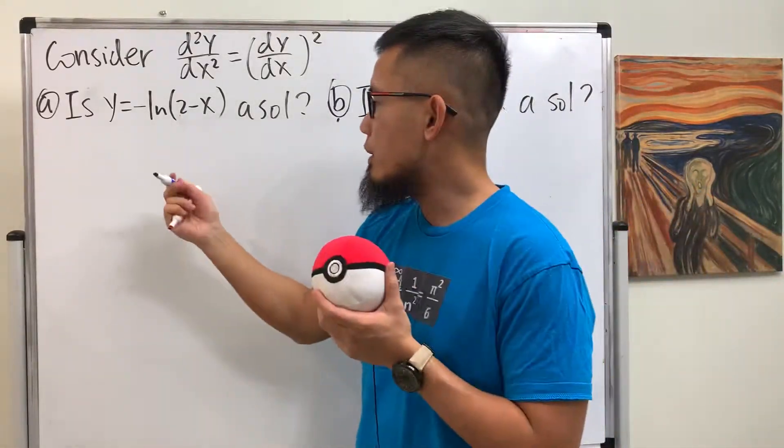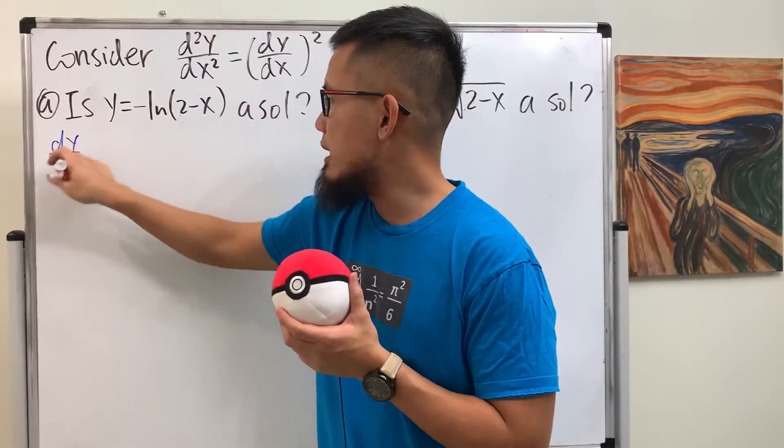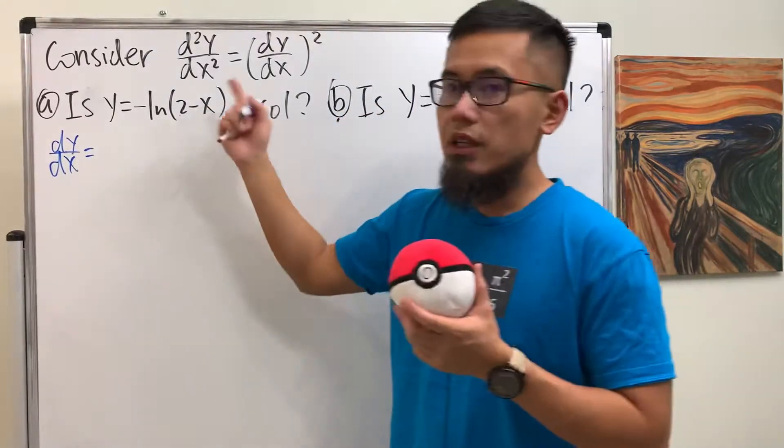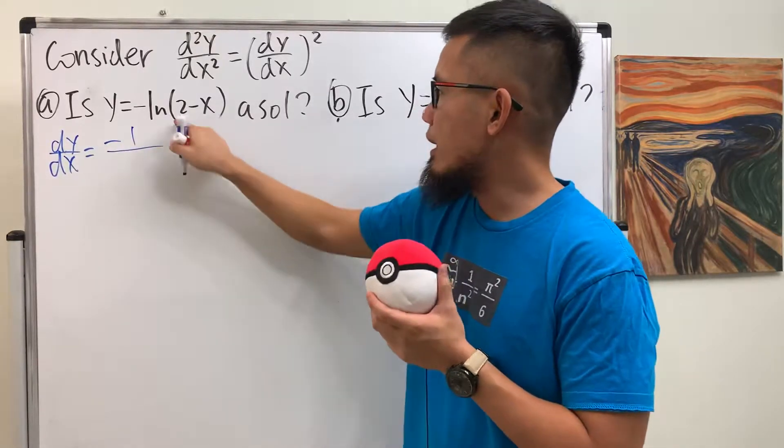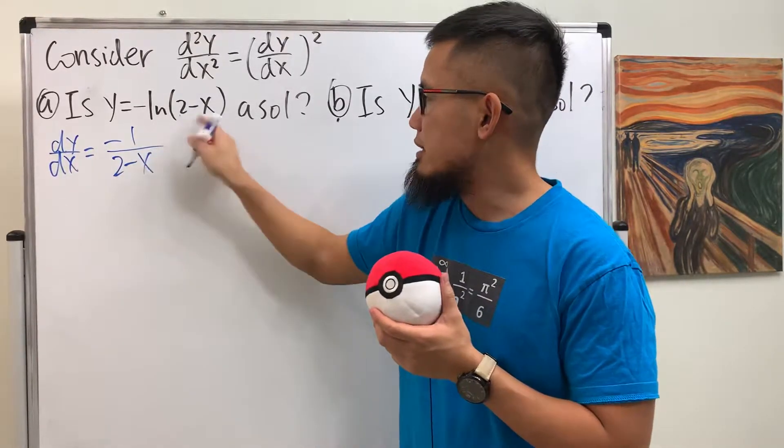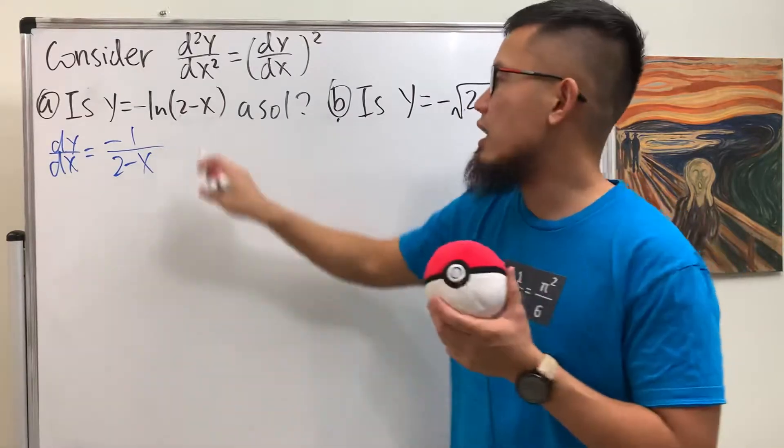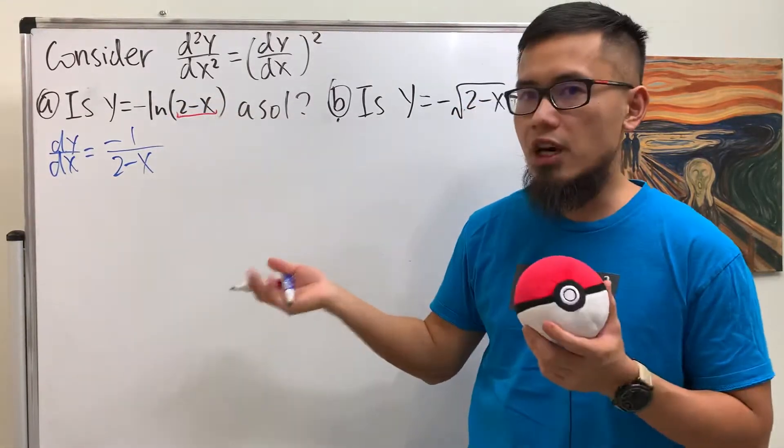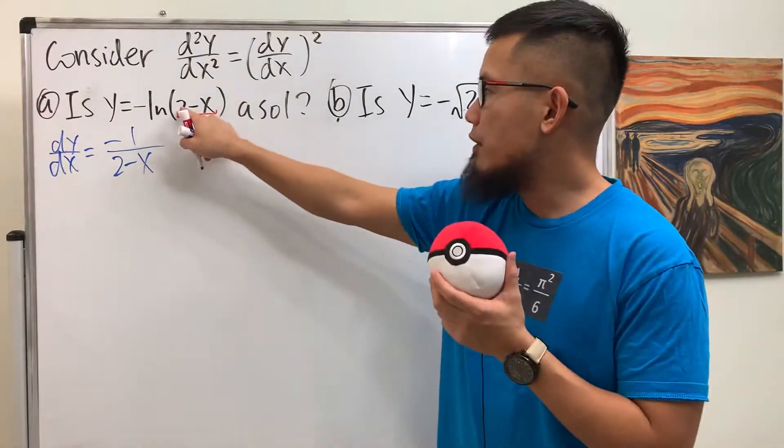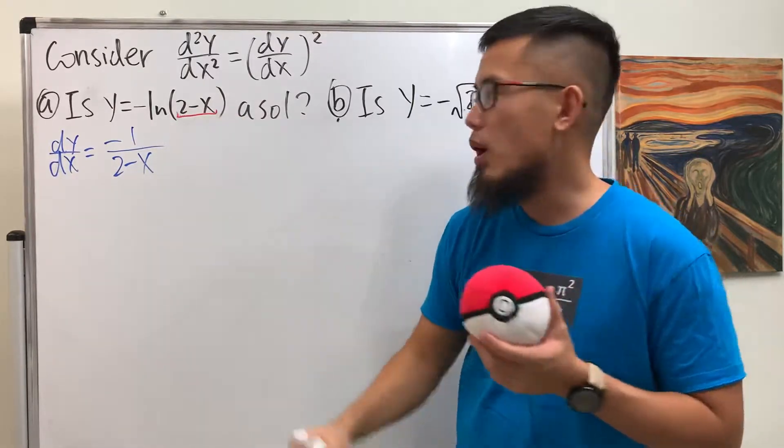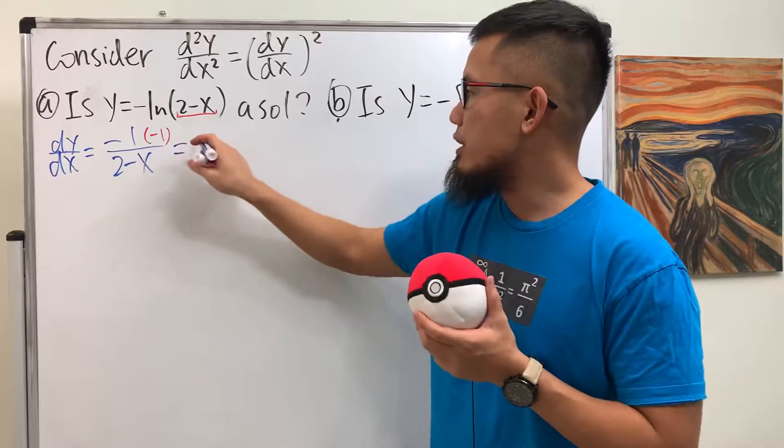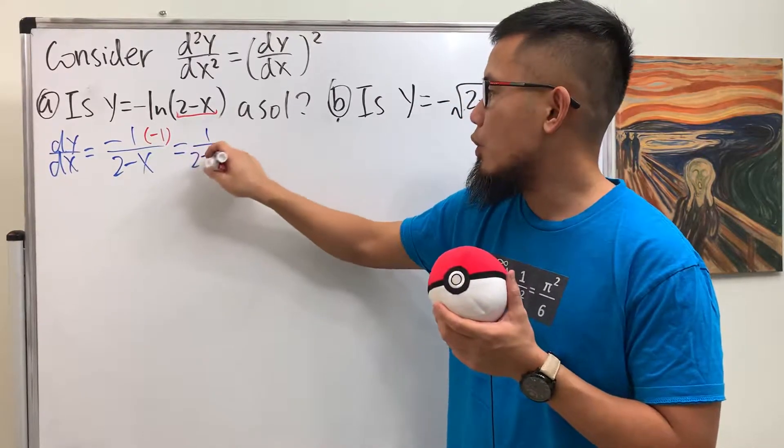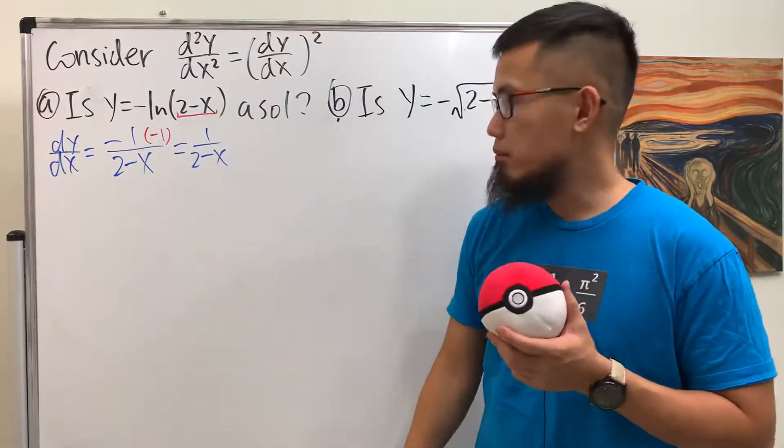Right here, I will just write down dy/dx for you guys, that's the first derivative. Differentiating negative ln, so we get negative 1 over, and then we have the inside on the bottom. Don't forget the chain rule multiplied by the derivative of the inside. Derivative of 2 minus x is negative 1, so multiply by negative 1 right here. We are really looking at this as positive 1 over 2 minus x.